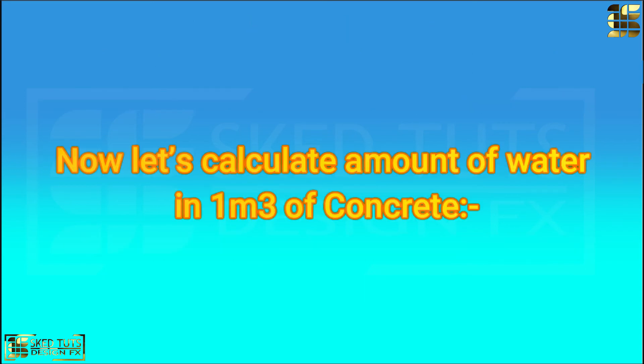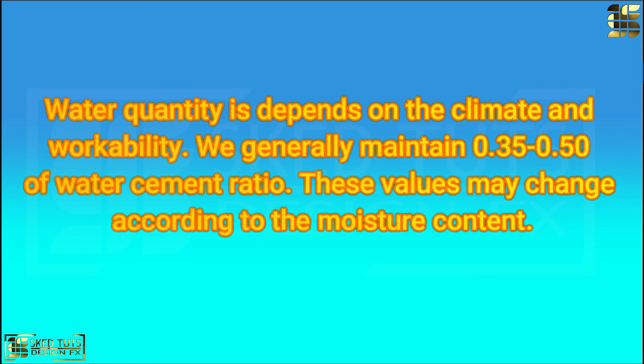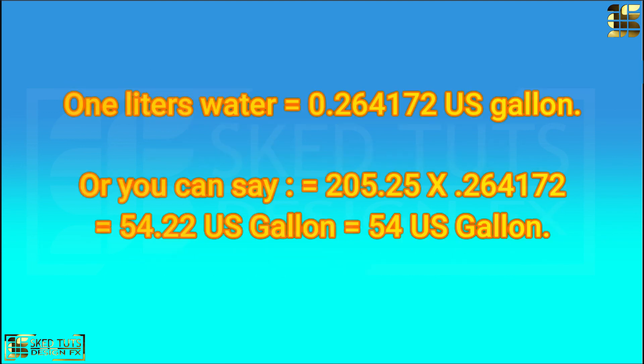Now we need to calculate amount of water required in 1 cubic meter of concrete. Water quantity is dependent on the climate and workability. We generally maintain 0.35 to 0.50 of water to cement ratio. This value may change according to the moisture content in aggregate. Water requirement of 1 cubic meter concrete is 410.5 into 50 percent is equal to 205.25 liter. Or you can say 205.25 into 0.264172 is equal to round figure 54 U.S. gallon.